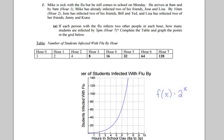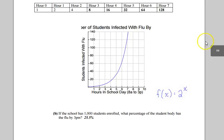Now, the next question says, if the school has 1,000 students enrolled, what percentage of the student body has the flu by 3 p.m.? Now, it looked like most everybody had an answer, but it wasn't 25.5.